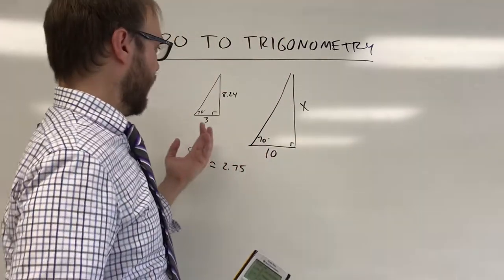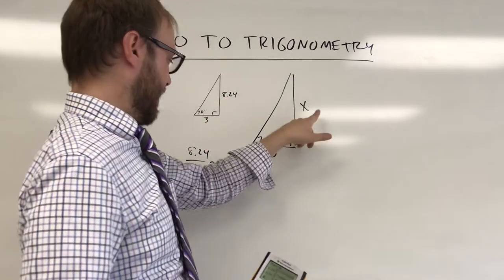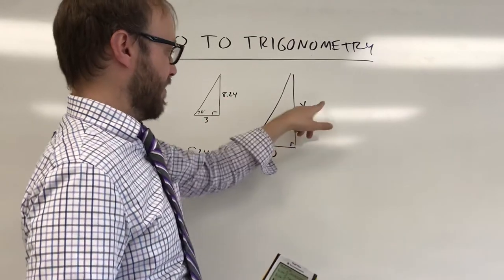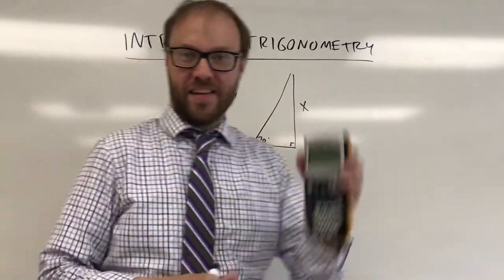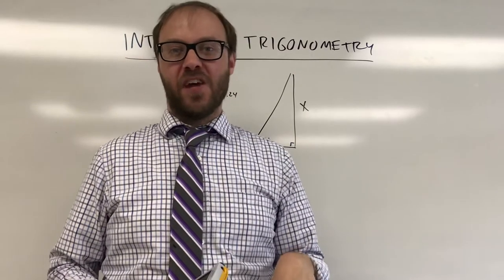So here, we're storing the relationship between the long leg and the short leg, and that ratio is always 2.75. Your calculator basically could store that value for you without you having to make your own triangle and figure out what the relationship is.